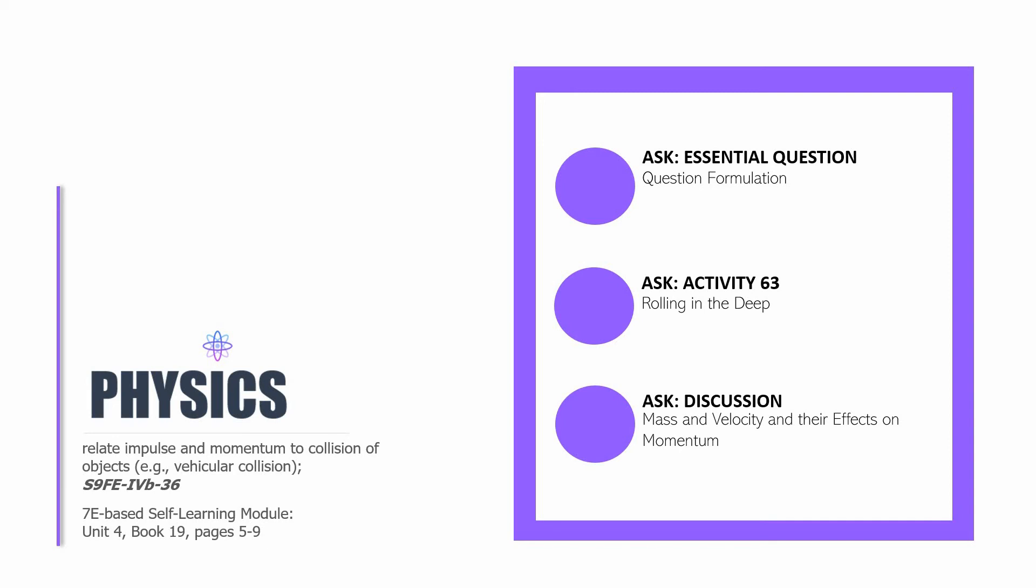Hello, this is SoyCJ, and this is the eighth episode of the Knowledge Catalogues Physics. In this episode, we are still going to work on the following learning competency, which is relating impulse and momentum to collision of objects, such as vehicular collisions. You will be needing a copy of the 7E-based Self-Learning Module in Science 9, which I have developed, and you have to open it in Unit 4, Book 19, pages 5 to 9.